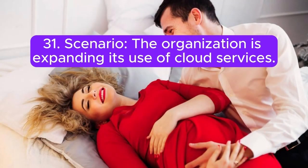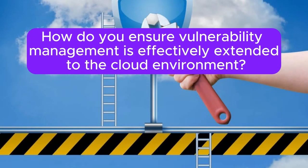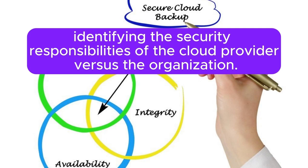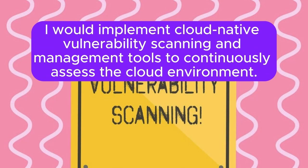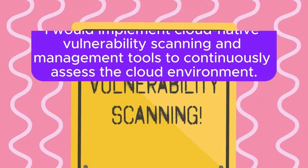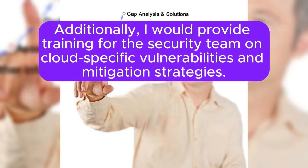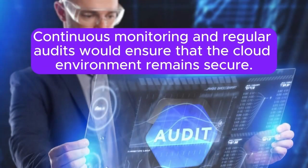Scenario 31: The organization is expanding its use of cloud services. How do you ensure vulnerability management is effectively extended to the cloud environment? I would start by understanding the shared responsibility model for the specific cloud services being used and identifying the security responsibilities of the cloud provider versus the organization. I would implement cloud-native vulnerability scanning and management tools to continuously assess the cloud environment. Ensuring secure configurations, regular patching, and applying security best practices for cloud services is crucial. Additionally, I would provide training for the security team on cloud-specific vulnerabilities and mitigation strategies. Continuous monitoring and regular audits would ensure that the cloud environment remains secure.